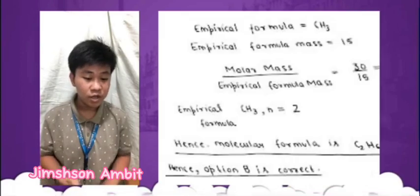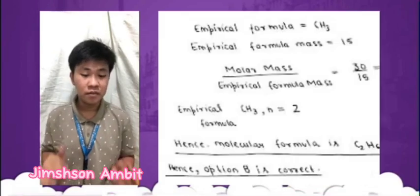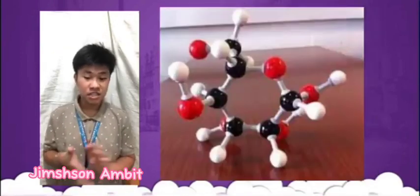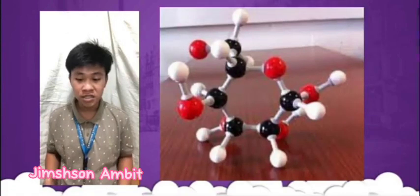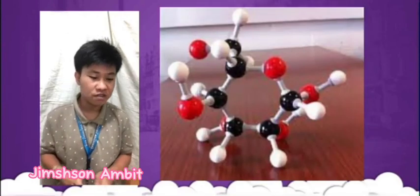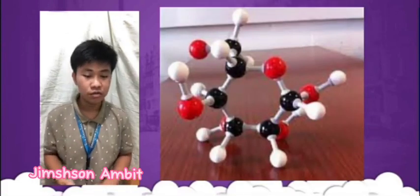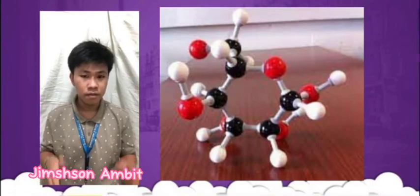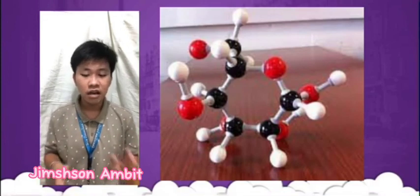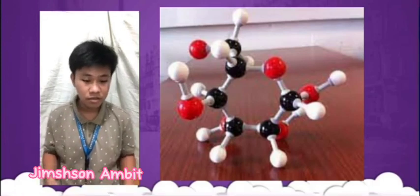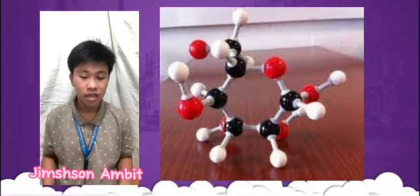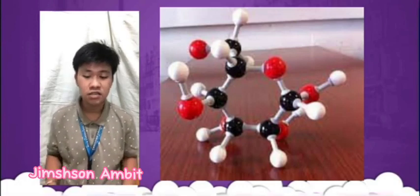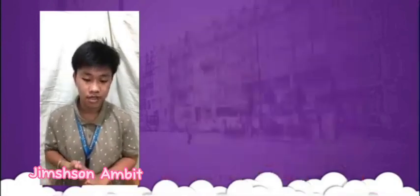Here we have an image of the empirical formula CH2O. This image shows the simplest whole number ratio of atoms in glucose. The carbon atoms are represented by the black circles, the hydrogen atoms by the white circles, and the oxygen atoms by the red circles.